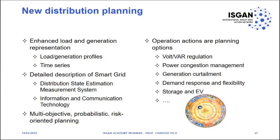Here is a list of possible operational actions: voltage/VAR regulation, power congestion management, generation curtailment, demand response and flexibility, storage and electric vehicles, and vehicle-to-grid. The main idea is: if you have to build a new line, maybe you don't need to build it because you can ask someone to do something when there is an issue. This is the main difference between traditional planning and the new planning paradigm we are proposing.